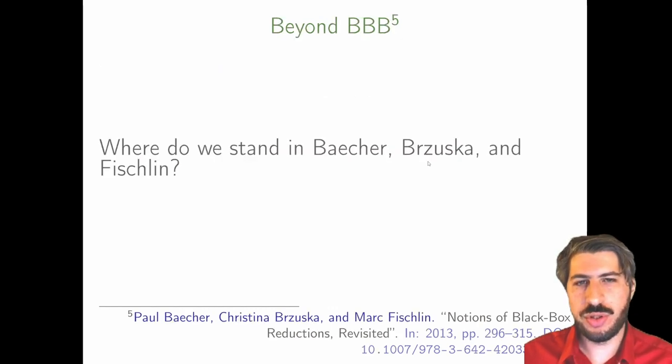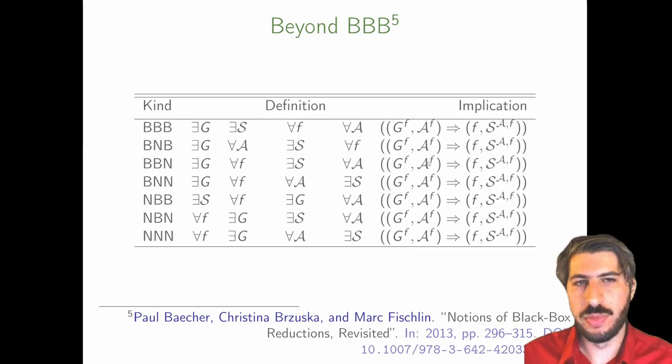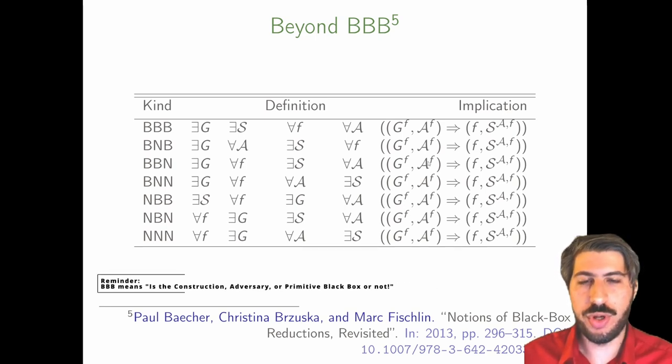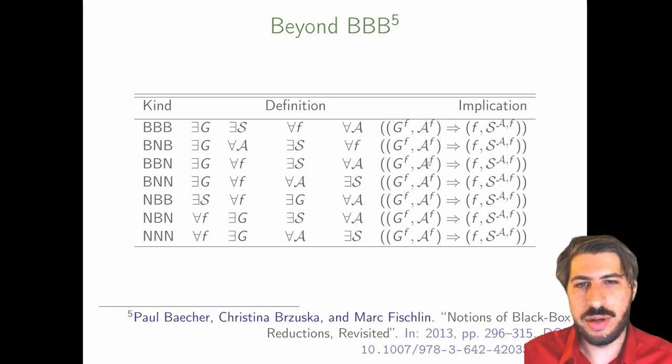That leaves the question, where do we stand in the fine hierarchy of Bacher, Brusca, and Fischlin? As we said, we consider fully black box reductions. That means in their hierarchy the BBB kind. We leave open the question of the existence of lifting correspondences in the other kinds.